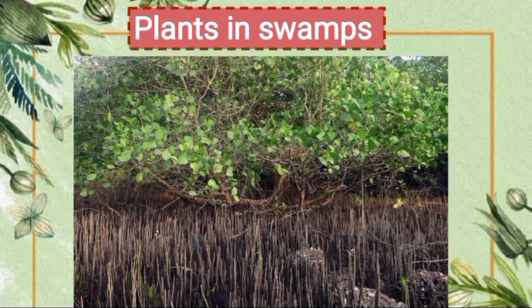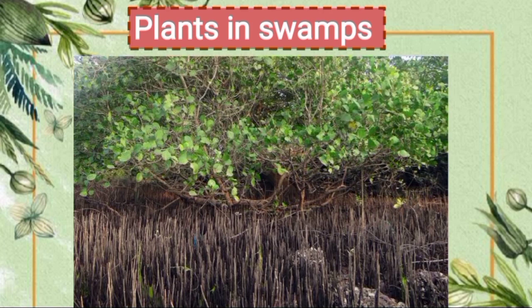Next is plants in swamps. Swamps have sticky soil which contains a lot of water. It becomes very difficult for plants to grow here because their roots cannot breathe. Some plants that grow here have roots that grow above the soil, called breathing roots. They take in air and help a plant to breathe, and also absorb water and minerals required for photosynthesis.